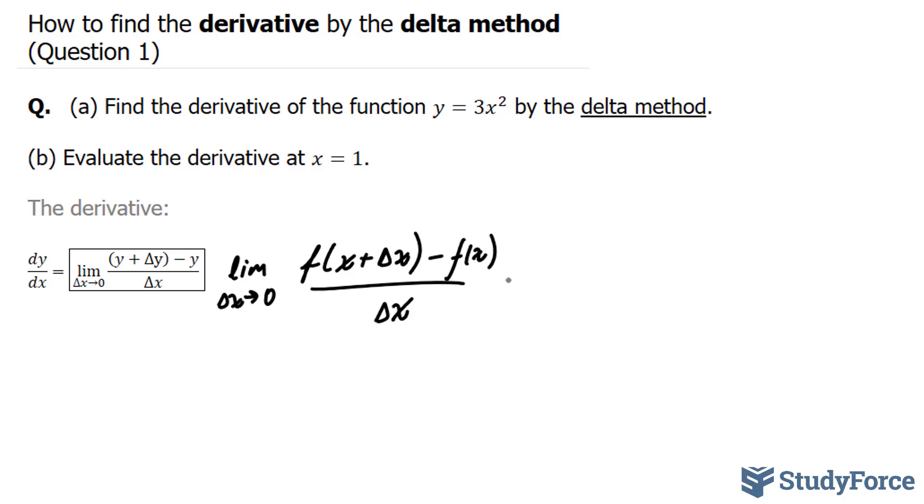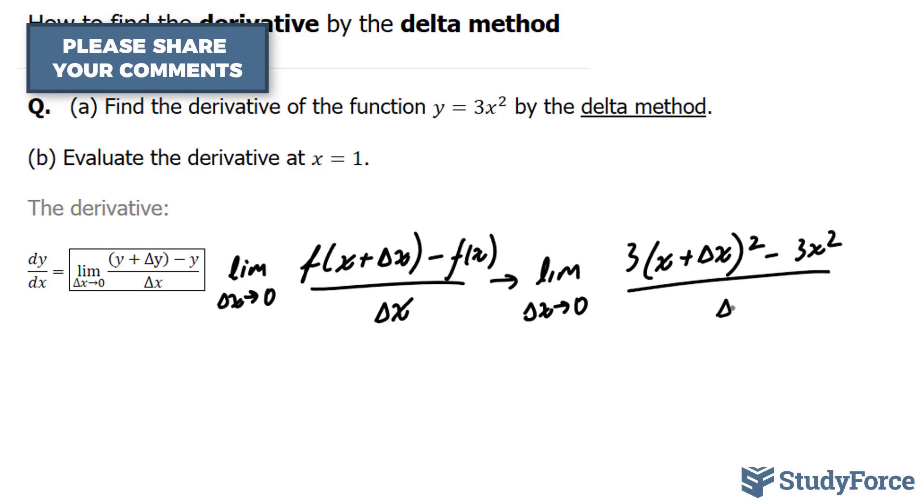So let's go ahead and do that. Let's substitute x plus delta x into this x, then subtract it from the function itself. We have the limit as delta x approaches 0 is equal to 3 bracket x plus delta x to the power of 2 minus 3x squared over delta x.